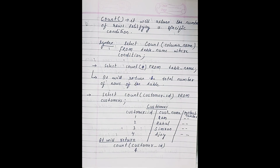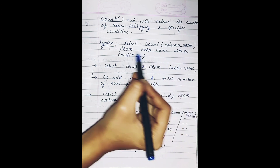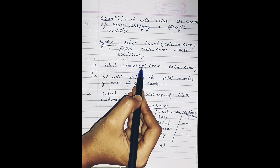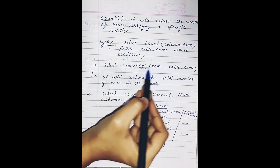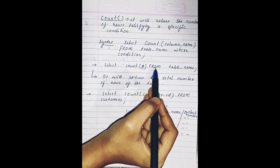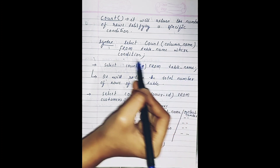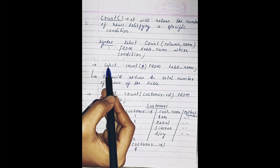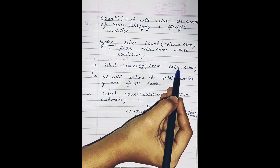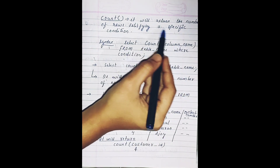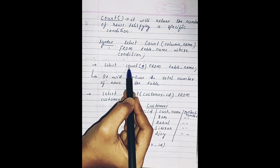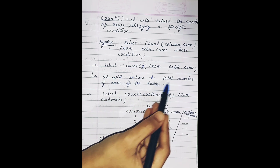Now moving ahead to the count function. The count function returns the number of rows satisfying a specific condition. The syntax is: SELECT COUNT(column_name) FROM table_name WHERE condition. For example, SELECT COUNT(*) FROM table_name — here, asterisk means we are selecting all column names. Since no condition is specified, it will return the total number of rows of that selected table.